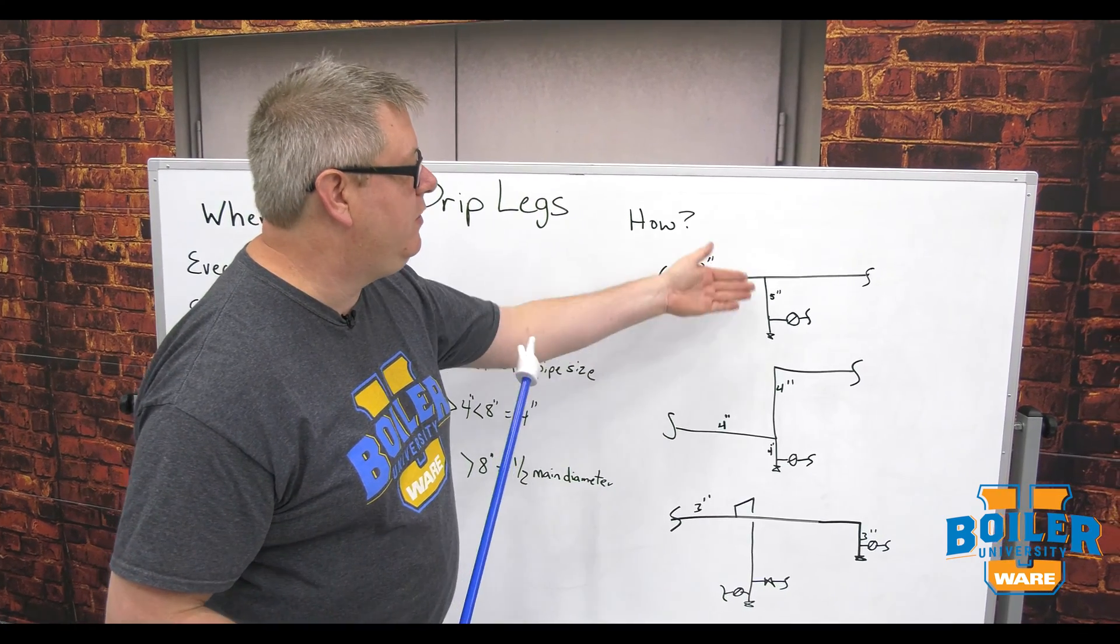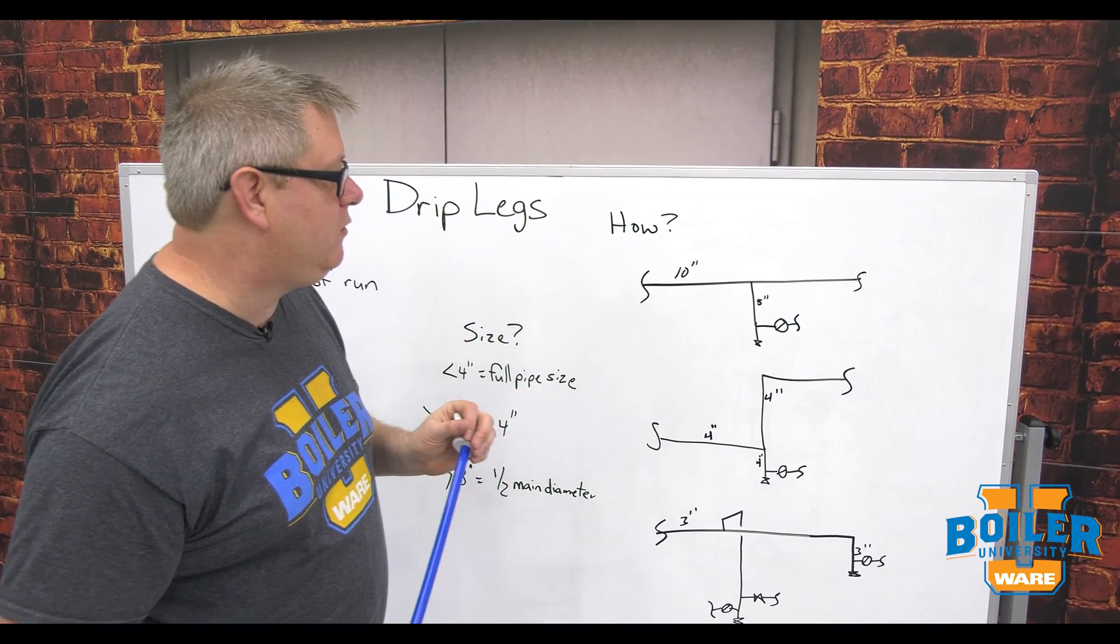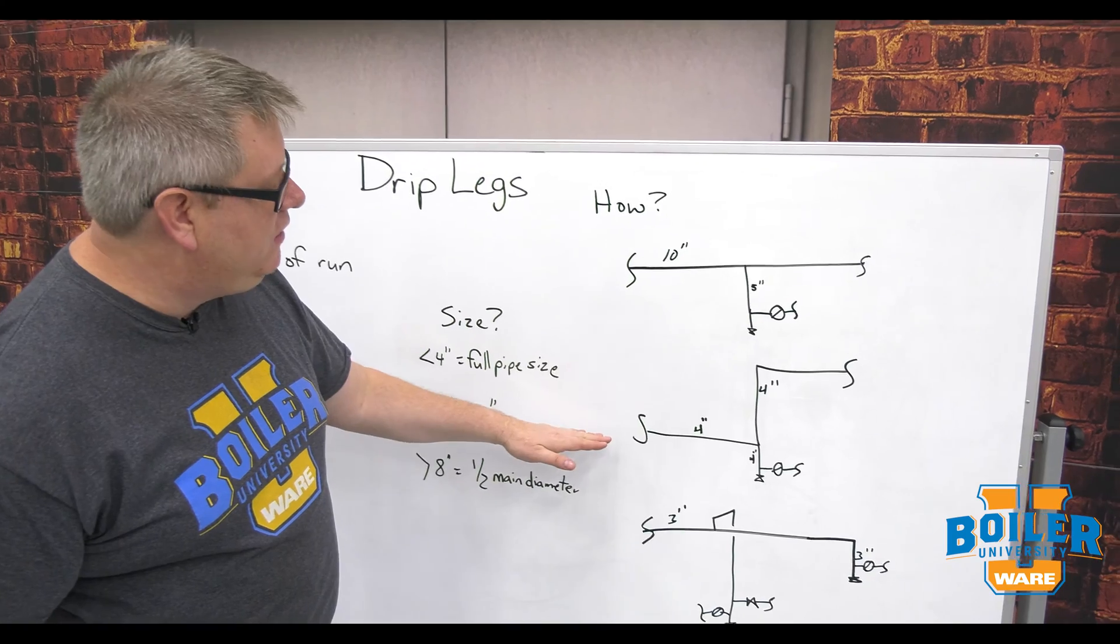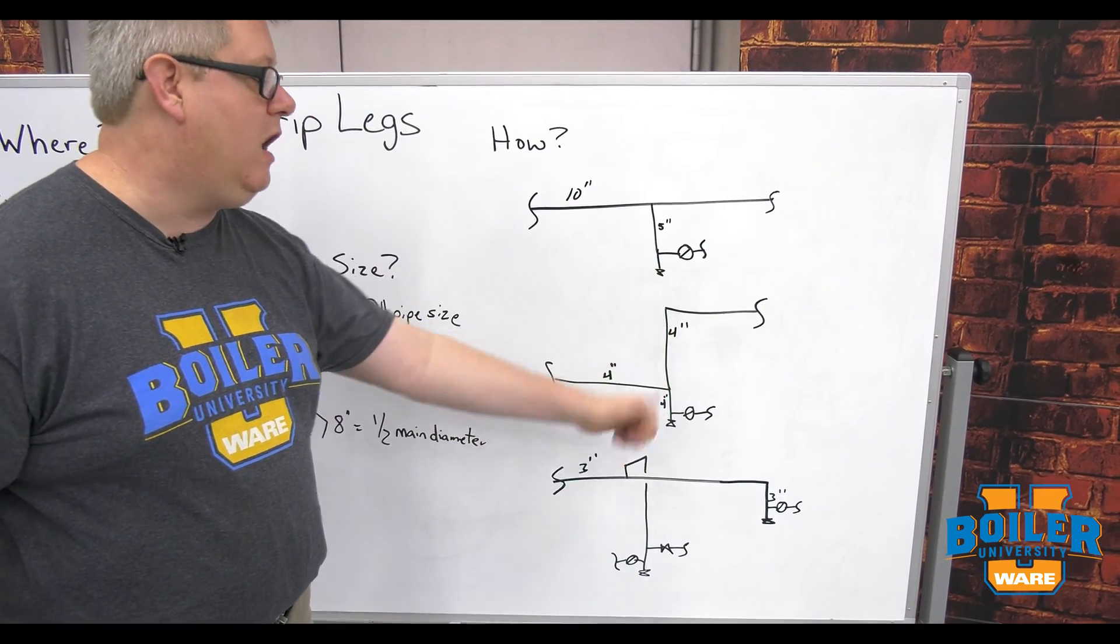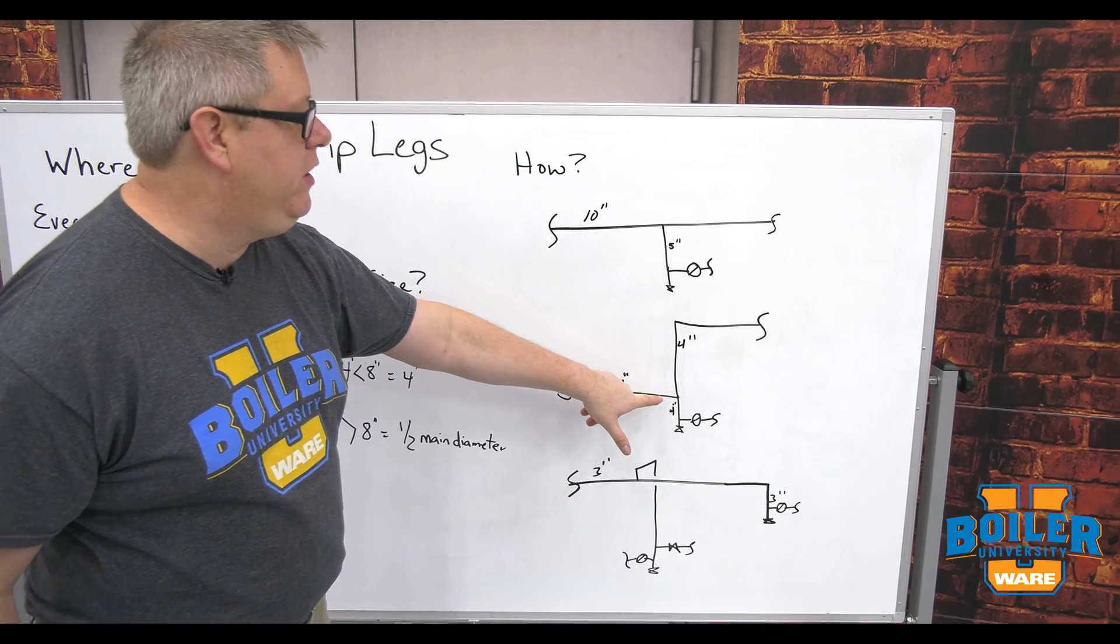We'll look at that next week. If we've got an elevation, a steam line coming this way, that condensate's not going to want to go up, so we'll typically just put in a full-size tee.